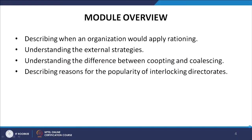Welcome to module 32 of this course on Organization Theory, Structure and Design. We started the discussion on managing the environment in module 31 and we will continue and wind up in this module. We will cover: describing when an organization would apply rationing, understanding the external strategies, understanding the difference between co-opting and coalescing, and describing reasons for the popularity of interlocking directorates.